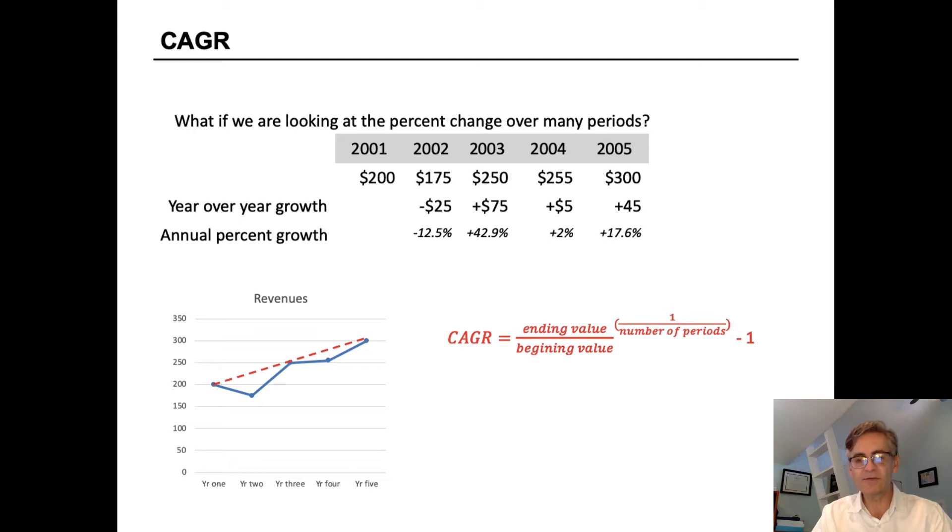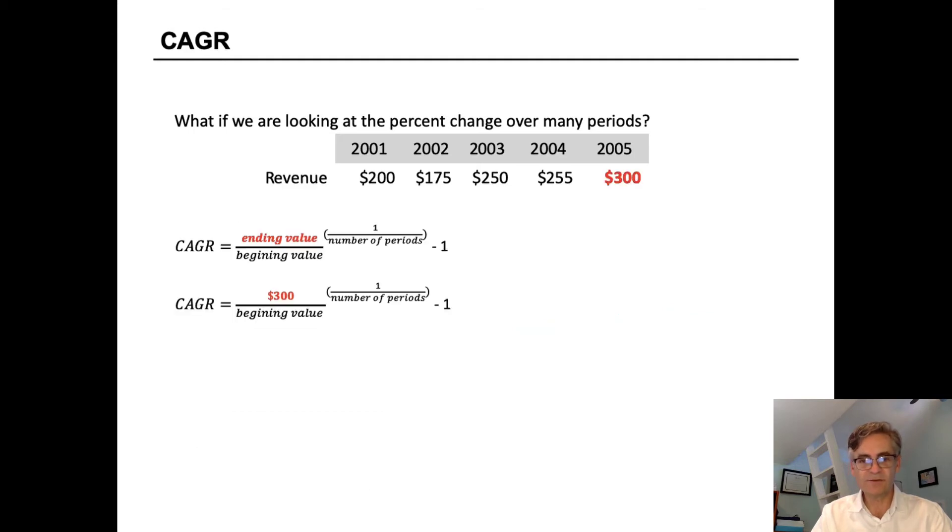Let's break this down and look at how we do each of these variables. The first thing we're going to do is put in the ending value in our numerator. That's 300. And then we'll take the beginning value in our denominator. That's 200.